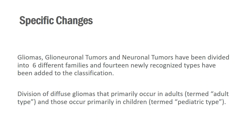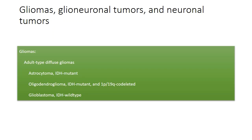Gliomas and Glioneuronal Tumors have been divided into six different families and 14 newly recognized types have been added to the classification in WHO CNS-5. Diffuse Gliomas occurring primarily in adults are named adult type diffuse Gliomas, while those in children are pediatric type diffuse Gliomas. Adult type diffuse Gliomas can be astrocytoma IDH mutant, oligodendroglioma IDH mutant and 1P19Q co-deleted, or Glioblastoma IDH wild type.